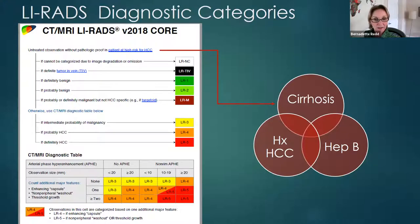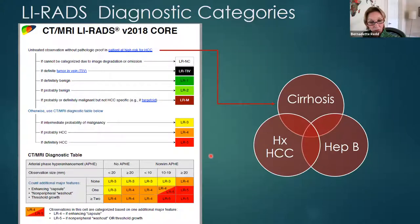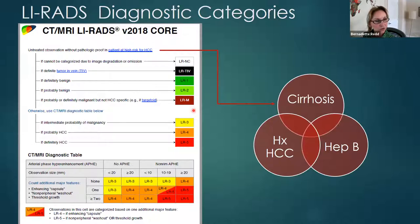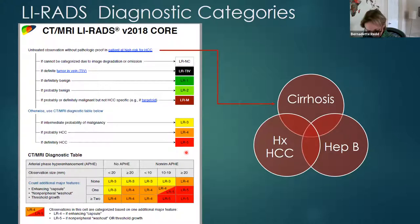Now, on to LIRADS for CT and MRI. We first confirm the patient is high risk with cirrhosis, chronic hepatitis B, or a personal history of HCC. There are six diagnostic categories assigned based on probability of malignancy: LR1 — definitely benign; LR2 — probably benign; LRM — findings probably malignant but without typical HCC appearance; LR3 — intermediate probability; LR4 — probable HCC; and LR5 — definite HCC. Once in these categories, a diagnostic table helps guide further evaluation.